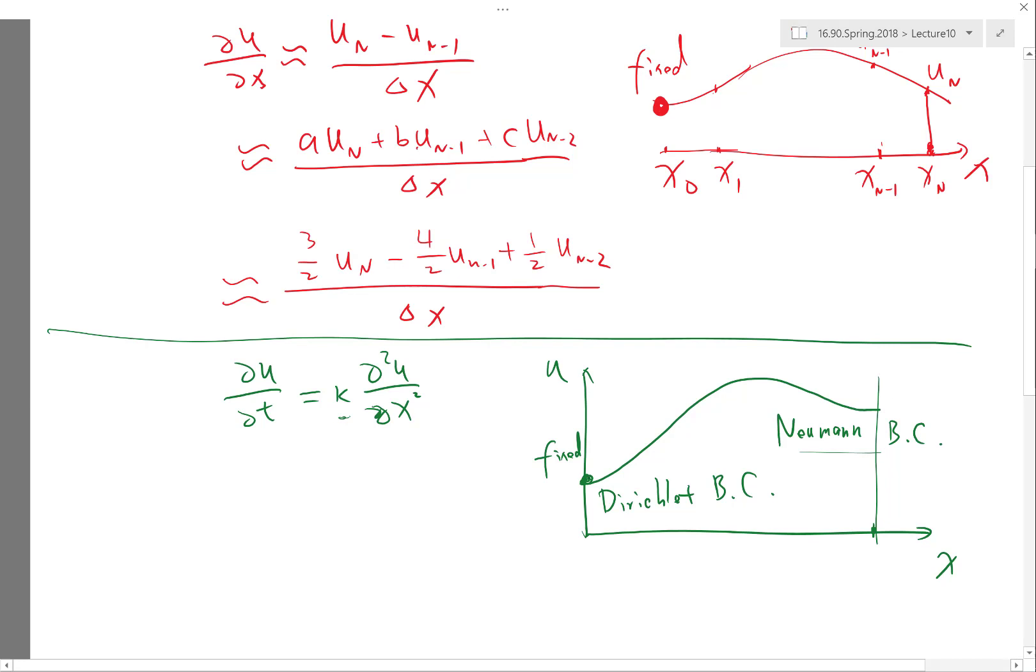So that boundary condition is actually saying my derivative of u at x equal to 1 is a fixed value, for example 0. This is a different type of boundary condition than fixing the u at x equal to 0 equal to, let's say, 1. These are two different types of boundary conditions.